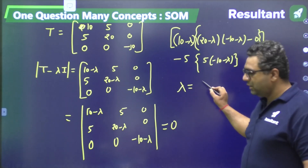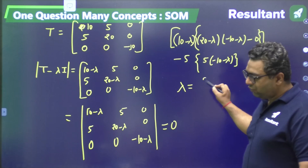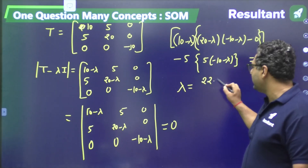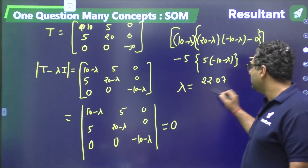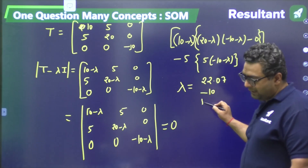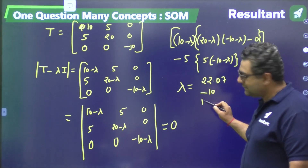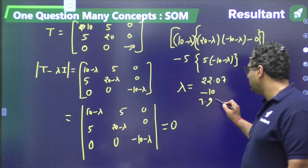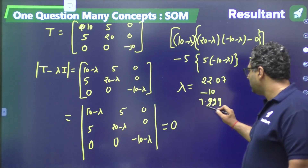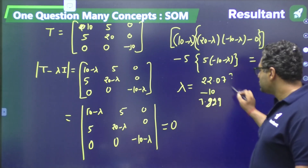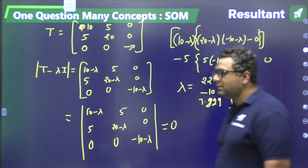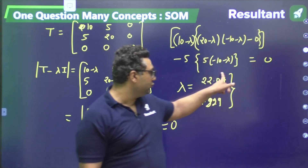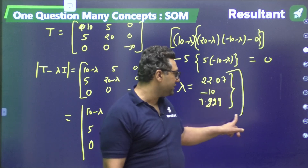Solving the cubic equation gives three eigenvalues: lambda = 22.07, −10, and 7.929. These eigenvalues are the three principal stresses sigma_1, sigma_2, and sigma_3 — the same values we found earlier. This is the eigenvalue method for finding principal stresses.